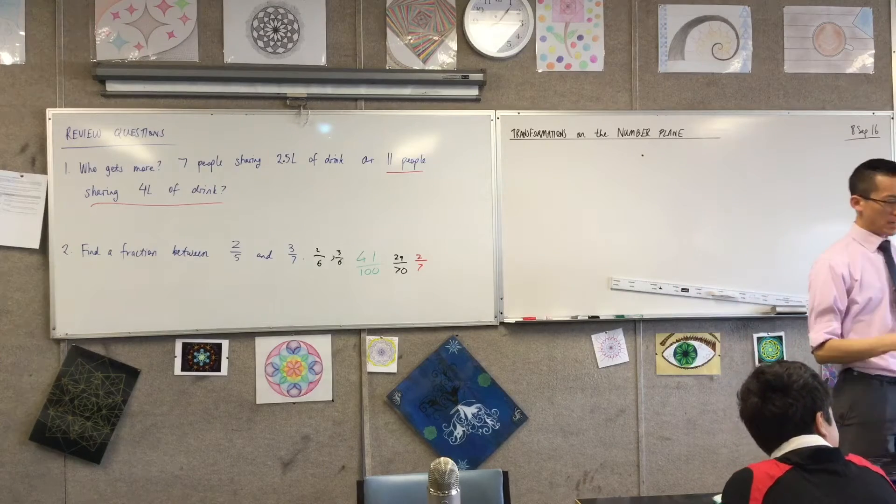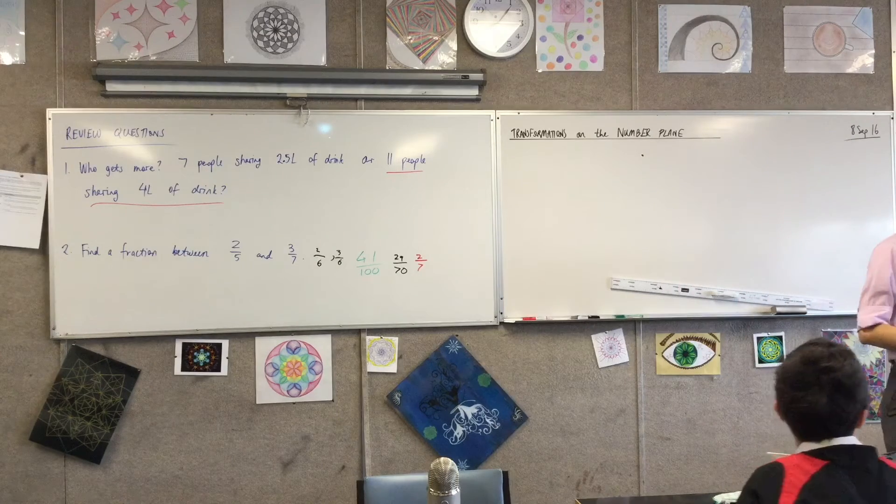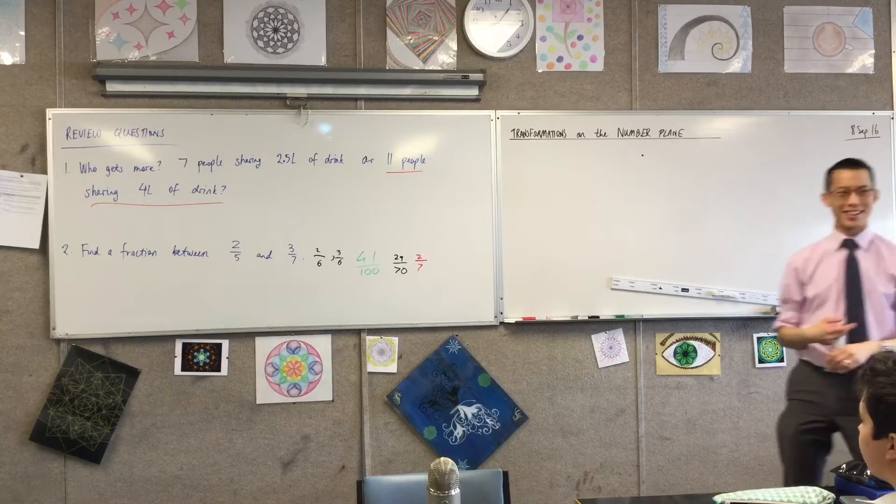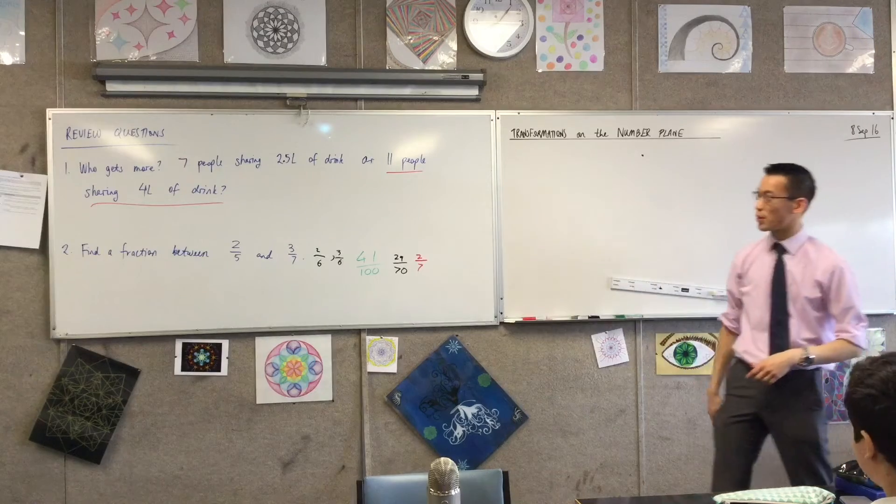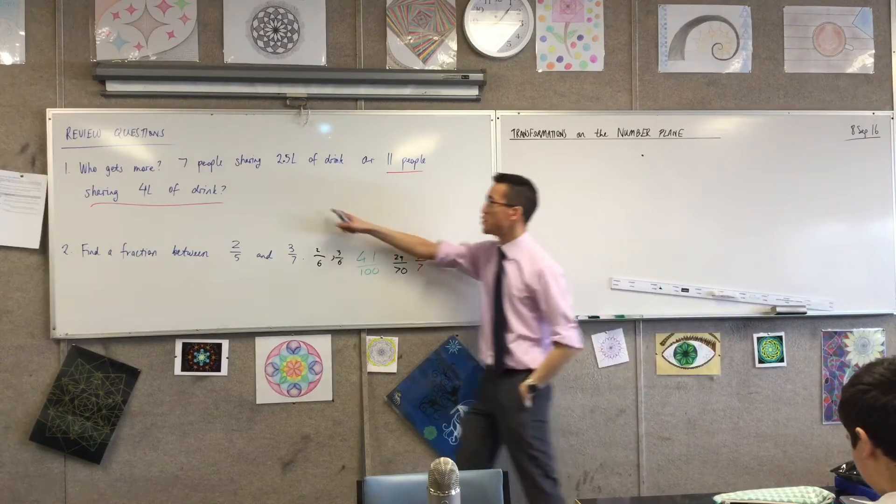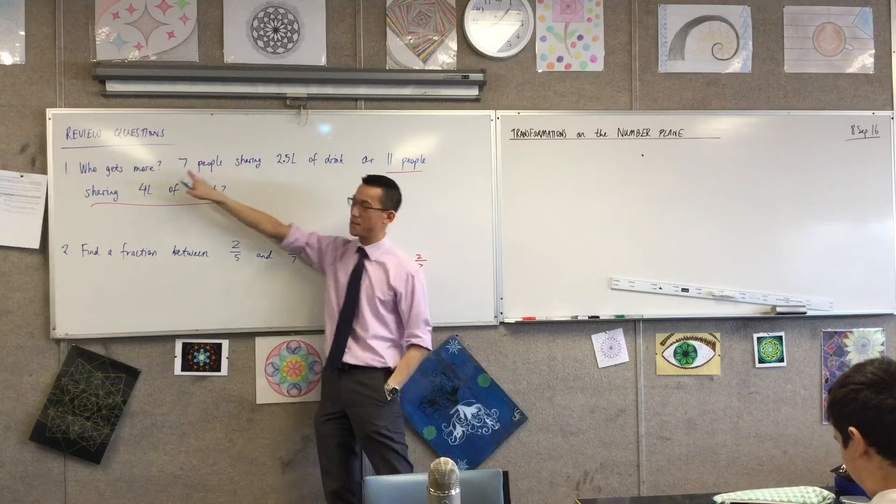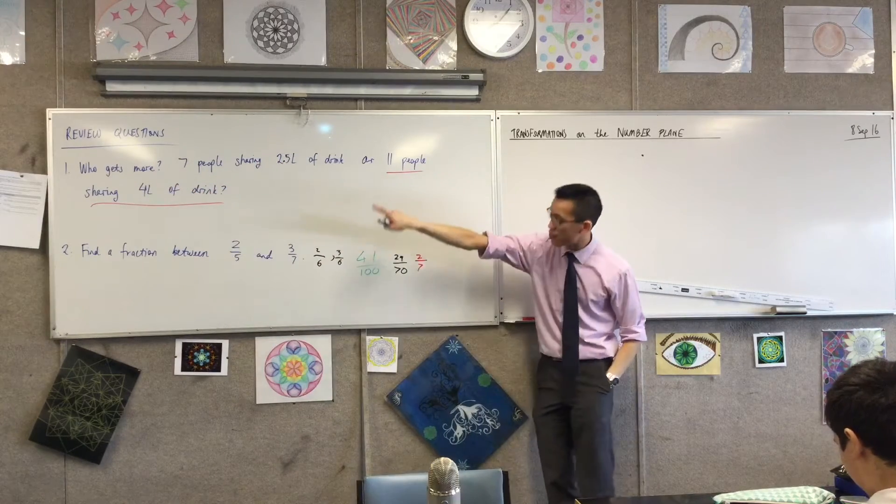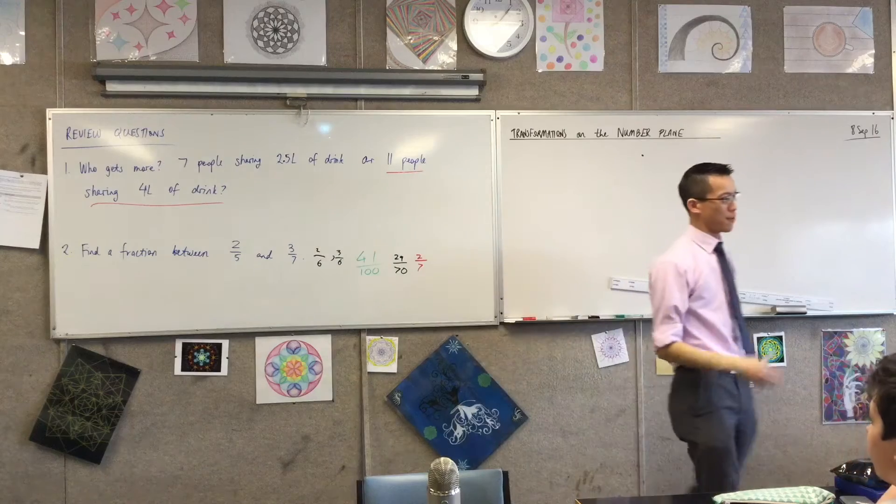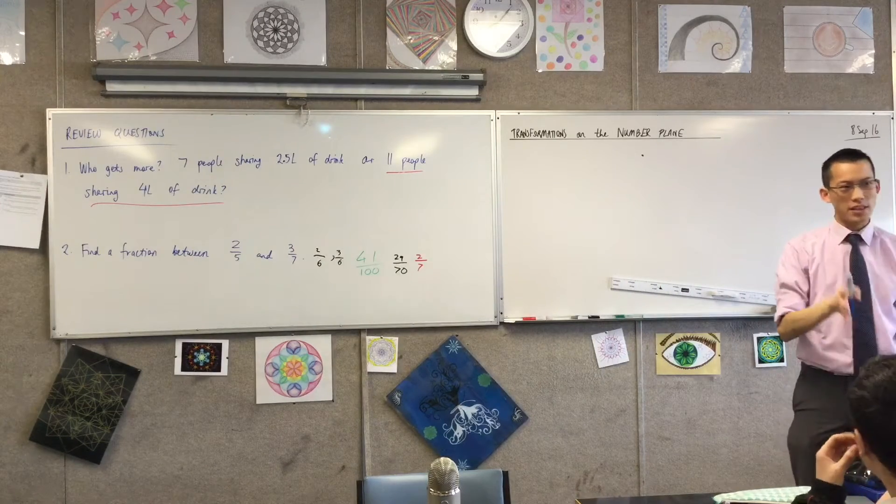Here's what we're going to do. We'll do this one at a time. I think we can do the first one first. You know I often like to take them out of order. We'll do the first one first. Who gets more? You've got this amount of drink shared among this many people versus that amount of drink shared among this many people.